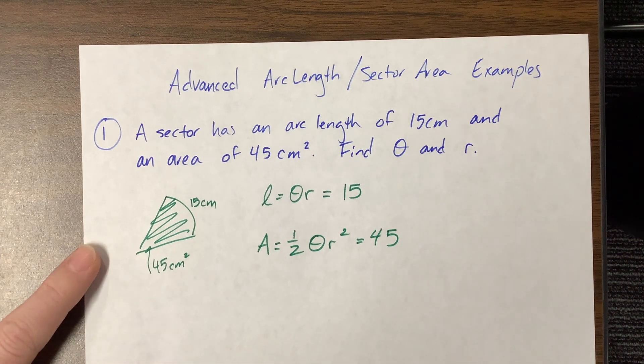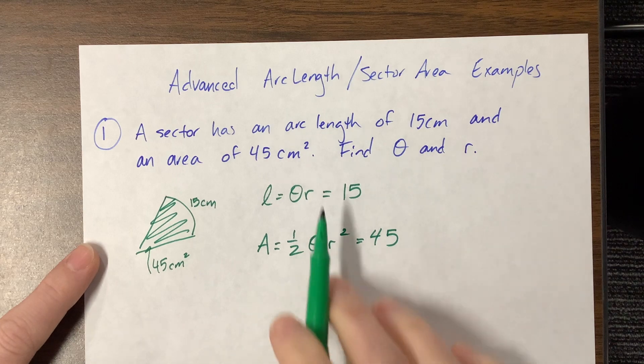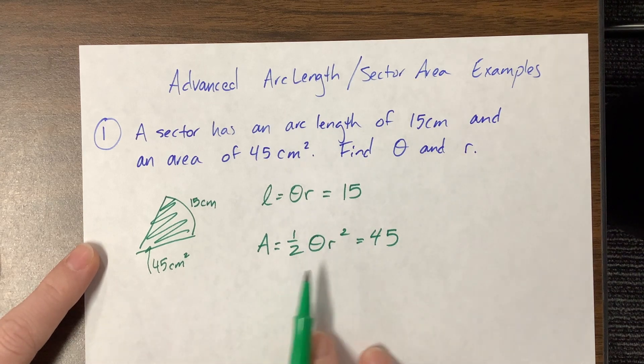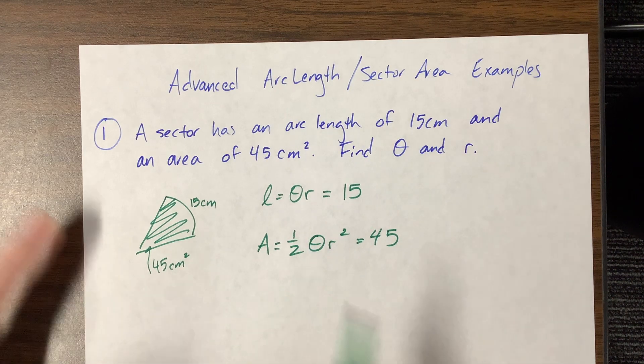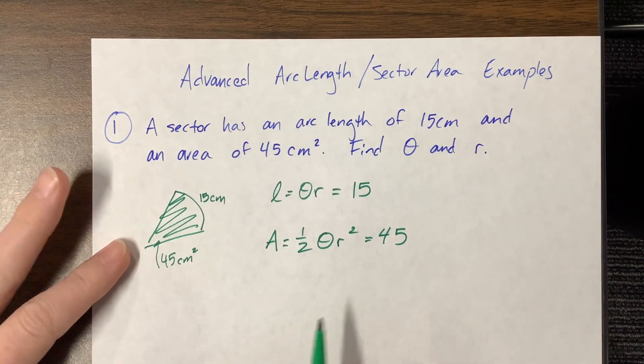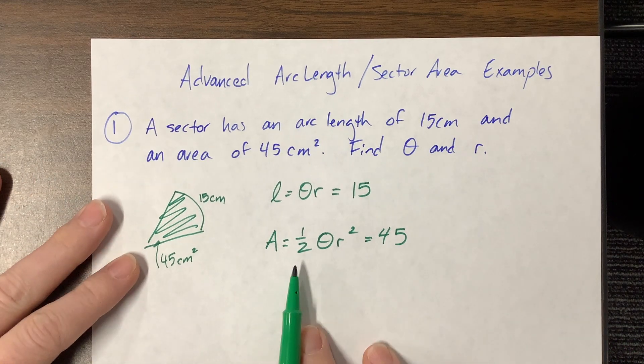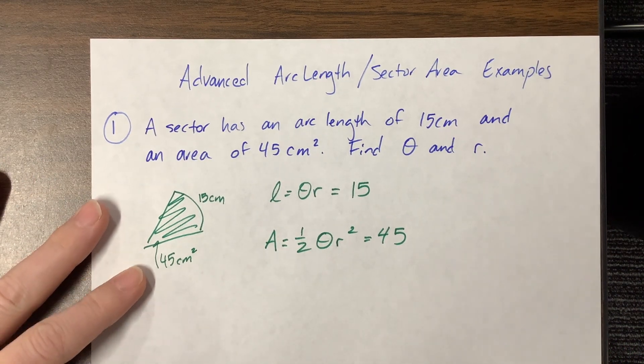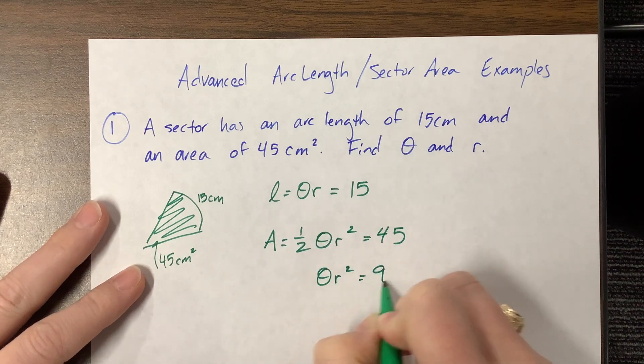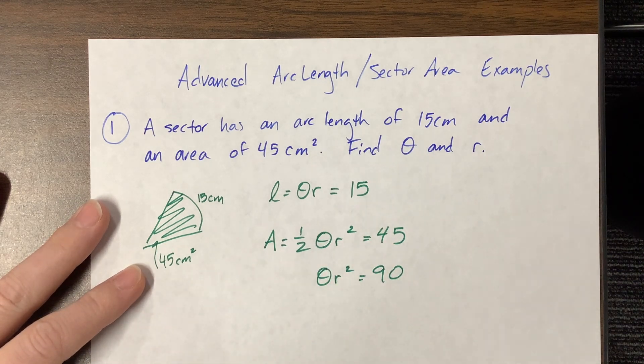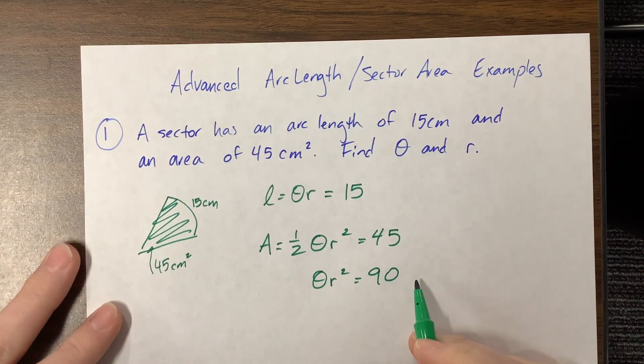So we have two equations with two variables, two things that we don't know. We don't know r, we don't know theta and so we have a system. So the easiest way to think about this, first of all, I don't really feel like dealing with that fraction. So I could say this and just multiply both sides by 2 and then we're looking at that scenario.